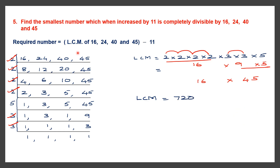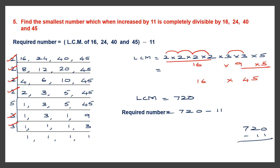Now to find the required number, we find the LCM and subtract 11 from it. So the required number is 720 minus 11. Let's subtract: carry over, 10 minus 1 is 9, 1 and 7. So 709 is the required number and this is our answer.